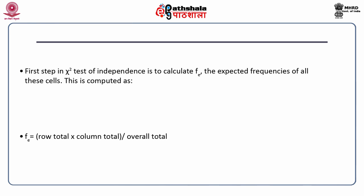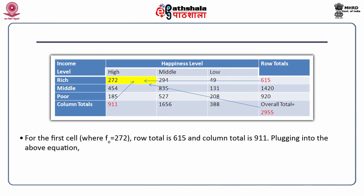The expected frequencies of all cells are computed as row total multiplied by column total divided by the overall total. For example, for the first cell: the column total is 911, the row total is 615, and 911 multiplied by 615 divided by 2955 gives 189.6. You have to do the same operation for the rest of the cells. It is best to do this linearly — first the column of observed frequencies, then the expected frequencies.